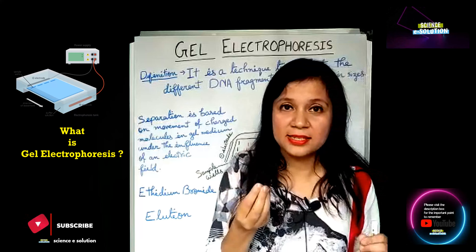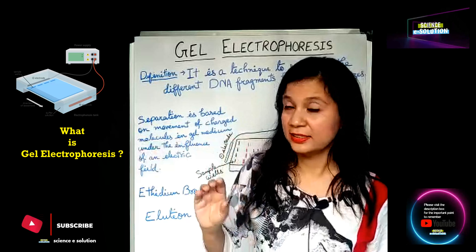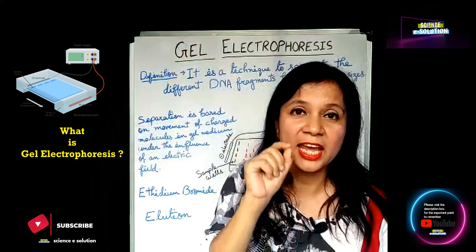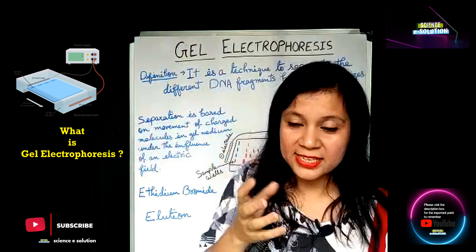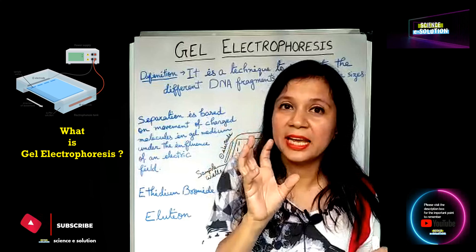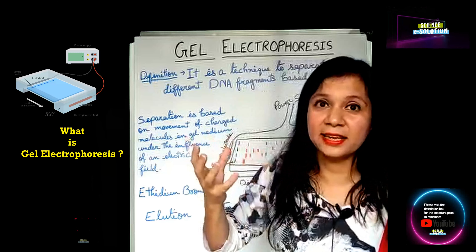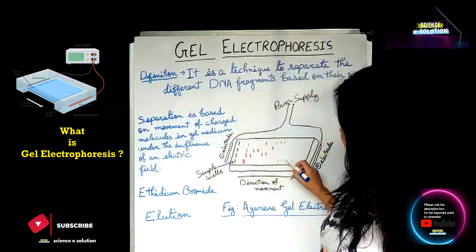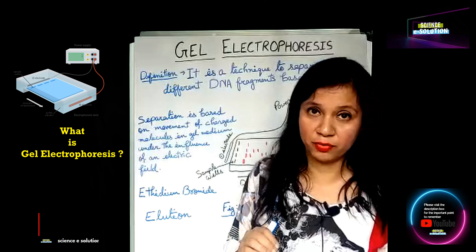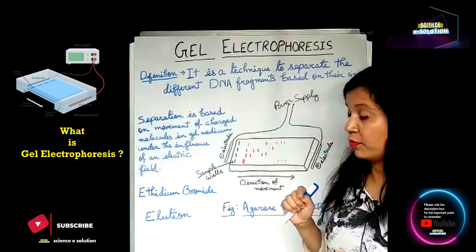The size of a fragment determines how far it will move. We use agarose gel — the gel used here is agarose gel. At a microscopic level, it has small sieves, like a sieve or strainer. When we use a sieve, the small liquid particles pass through, and the big molecules stay behind — they lag behind. Similarly, here the big DNA fragments lag behind and the small DNA segments move farther through the gel. So the gel has a sieving effect, and the separation is based on the movement of charged molecules in the gel medium under the influence of an electric field.